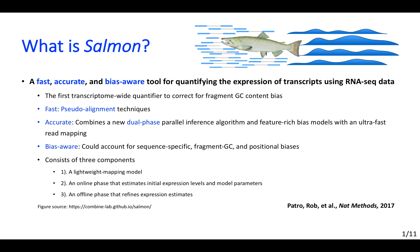Salmon generally consists of three components. The first one is a light-weighted mapping model. Second is an online phase that estimates initial expression levels and model parameters. The third one is an offline phase that refines expression estimates.